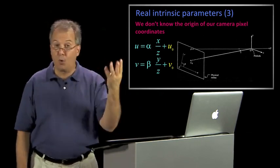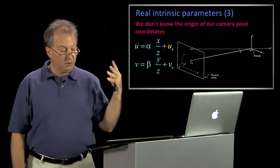So we have two offsets, a U and a V offset, U zero, V zero. So now we're up to one, two, three, four degrees of freedom. Two scale factors and two offsets. Are we done yet? But wait, there's more.